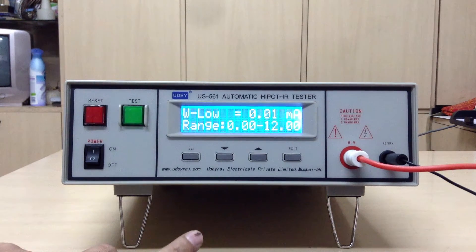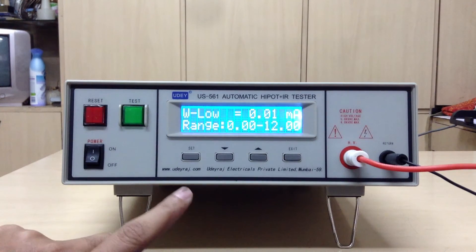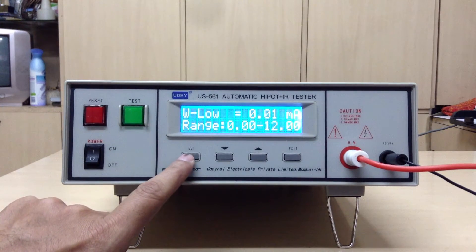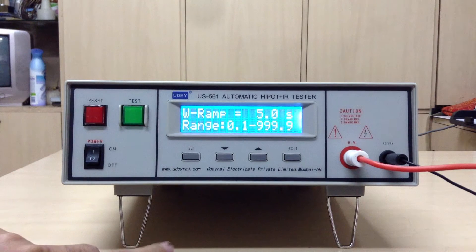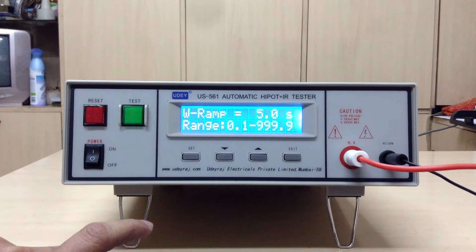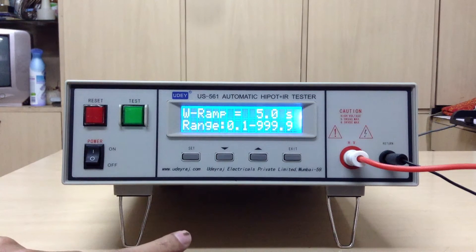Then you go to ramp time, which is from 0.1 to 999.9 seconds. This is the time for the KV rise.